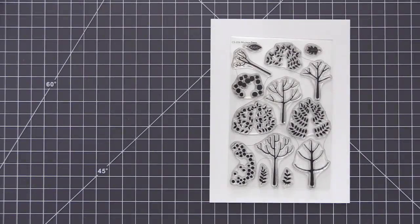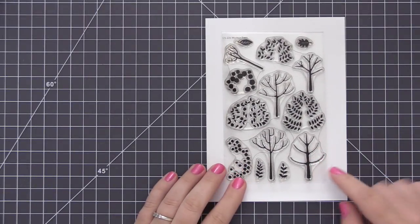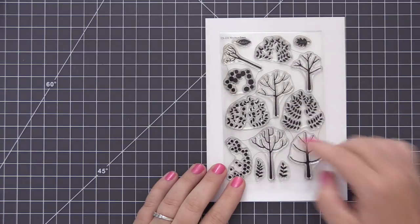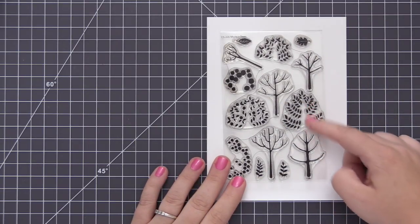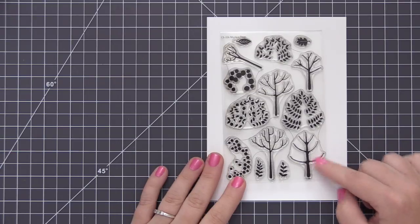Hi everyone, it's Stephanie here and welcome back to the My Favorite Things YouTube channel. In today's video I am going to be creating two cards using the new Modern Trees stamp set which is part of the September 2017 release.